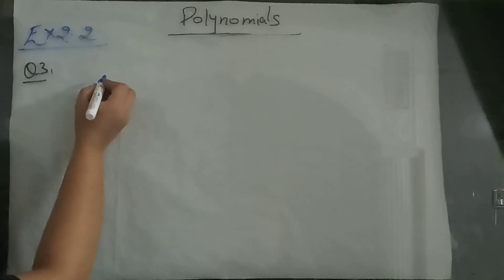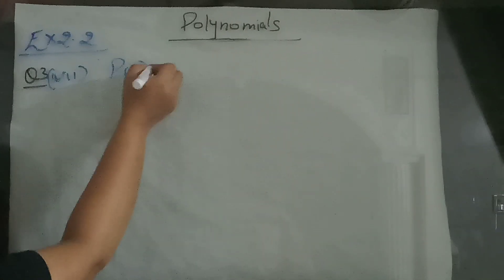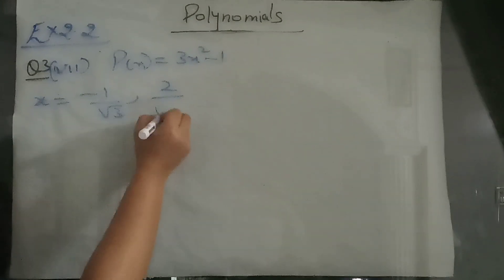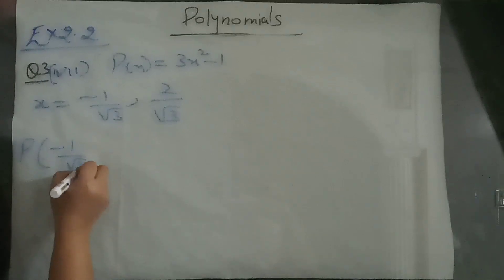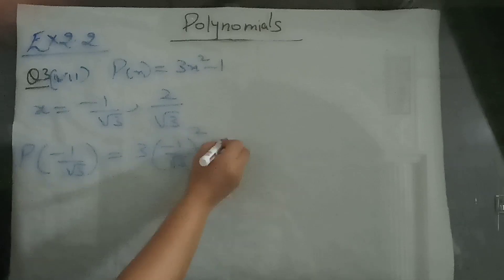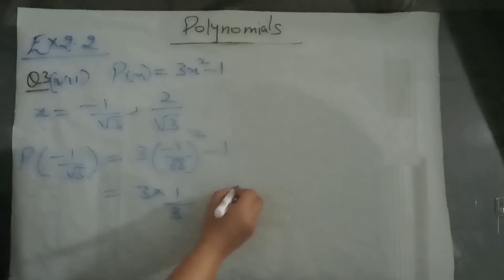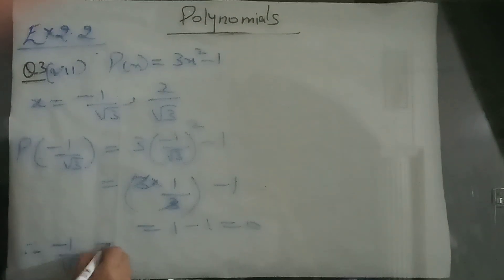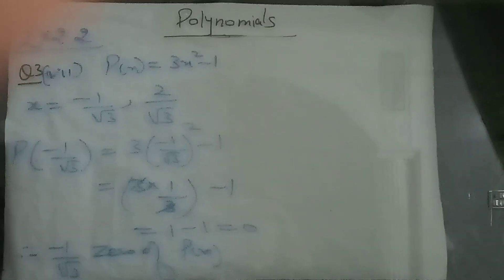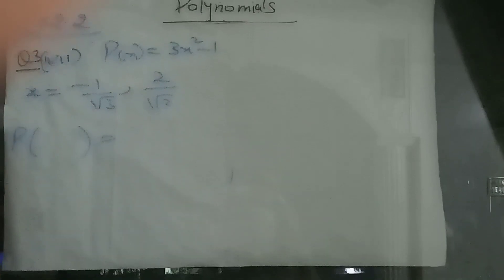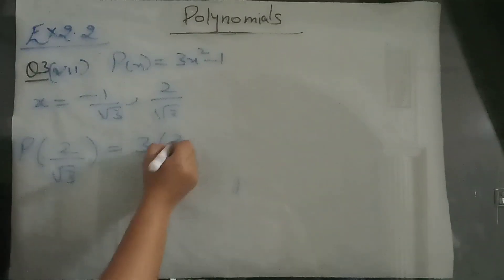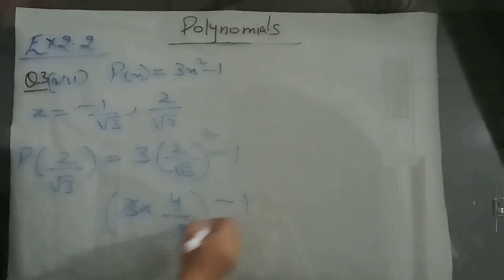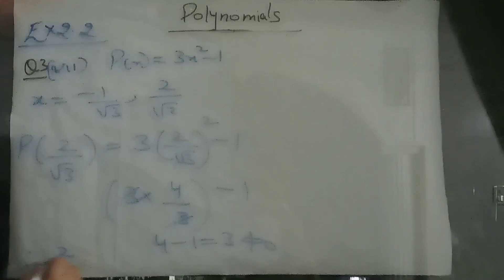Seventh part: p of x is 3x squared minus 1, for x equal to minus 1 by root 3 and 2 by root 3. Put minus 1 by root 3: 3 into (minus 1 by root 3) squared minus 1 gives 3 into 1 over 3 minus 1. 3 and 3 got cancelled, answer is 0 — so minus 1 by root 3 is a zero. Now put 2 by root 3: 3 into (2 upon root 3) squared minus 1 gives 3 into 4 by 3 minus 1, which is not 0. So 2 by root 3 is not the zero of the polynomial.